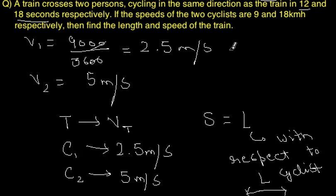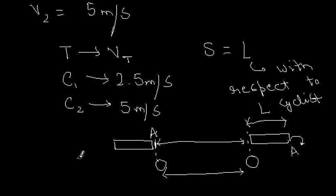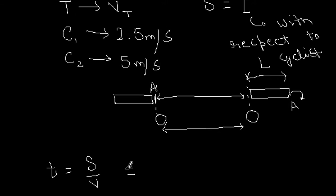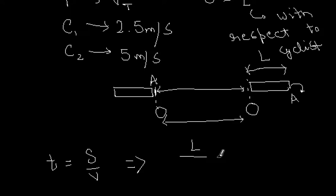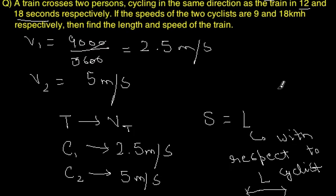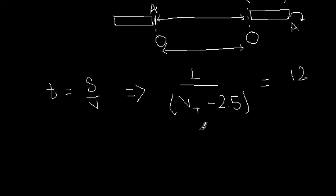We are given that the train passes the two cyclists in 12 and 18 seconds. Using time = distance / speed, for the first cyclist: L / (Vt - 2.5) = 12 seconds. For the second cyclist, using the relative speed Vt minus 5: L / (Vt - 5) = 18 seconds.